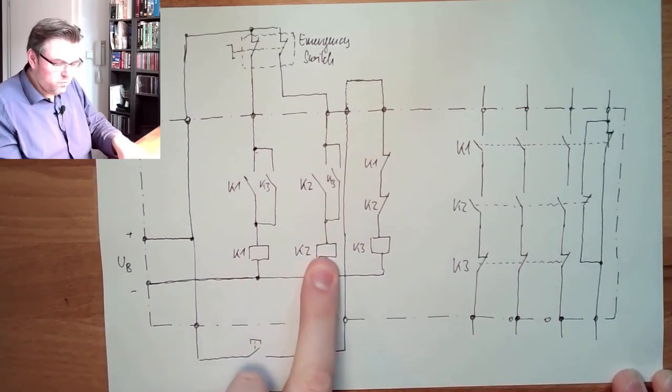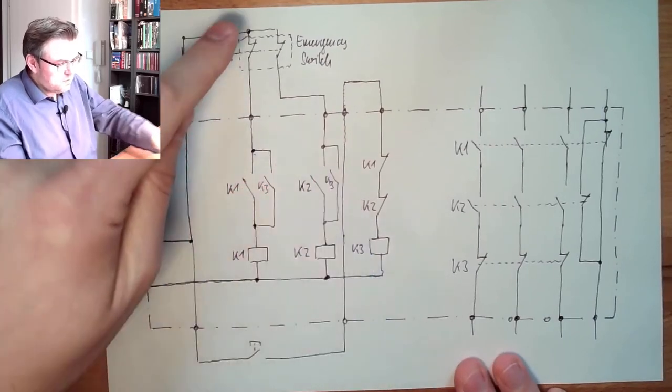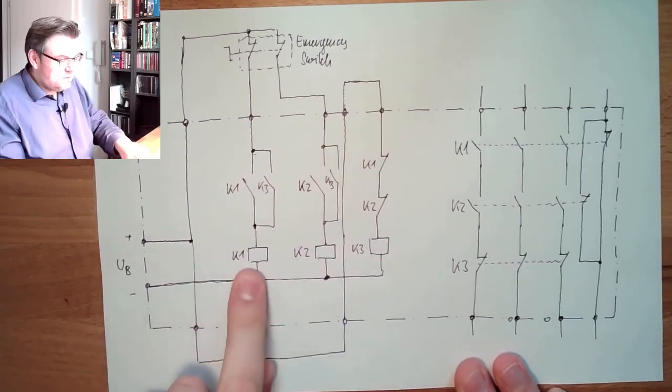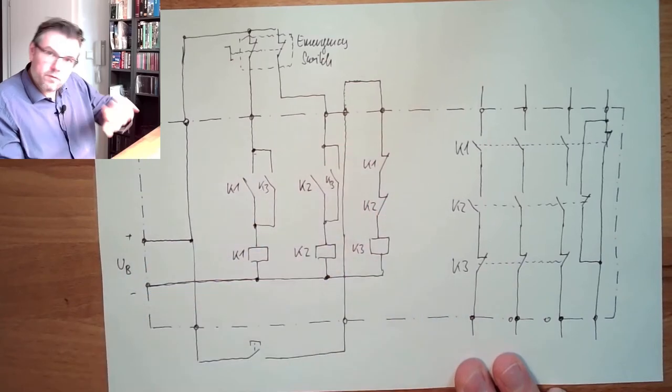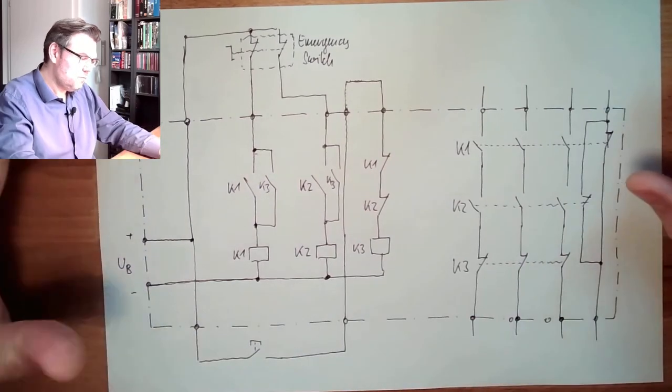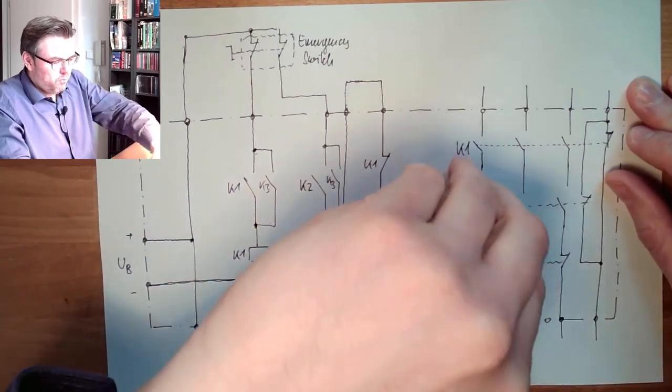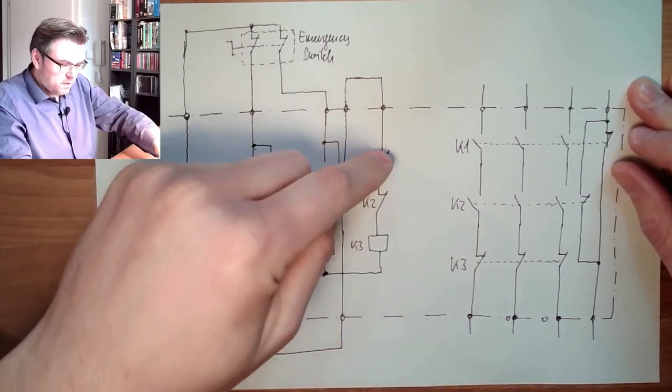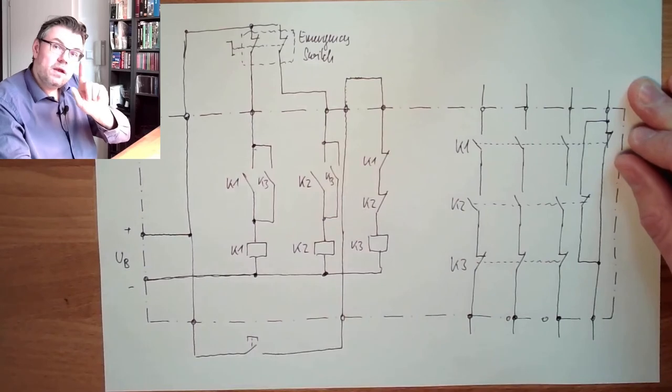So K1 is energized, K2 is energized, and K3 is off. K1 is closed, K2 is closed, and K3 is off. K3 is off is simple, because if K1 or K2 is closed, this will be open and K3 is off anyway. And this is why those two things are inside there.